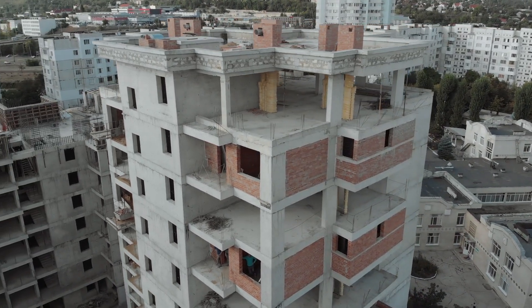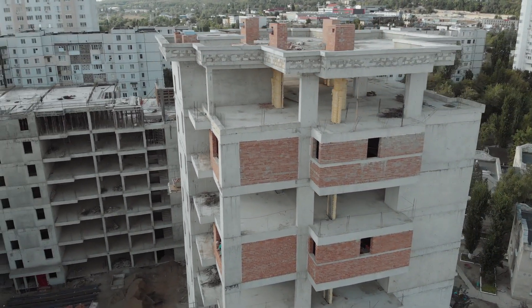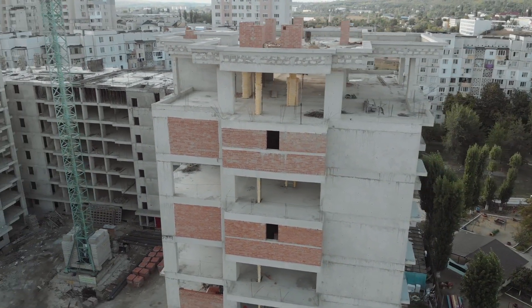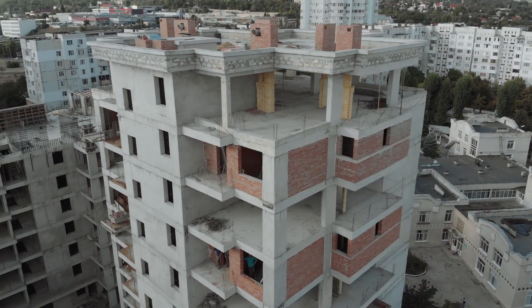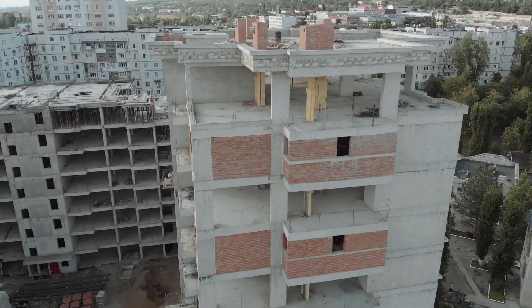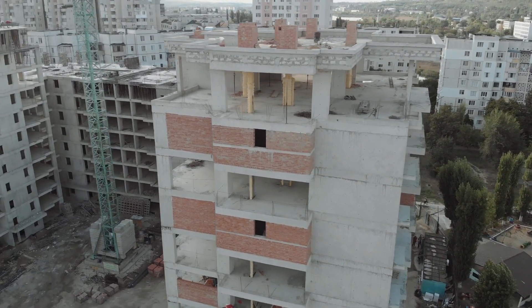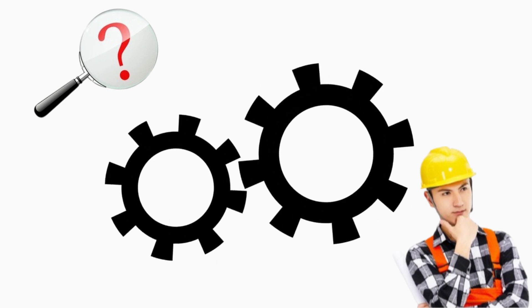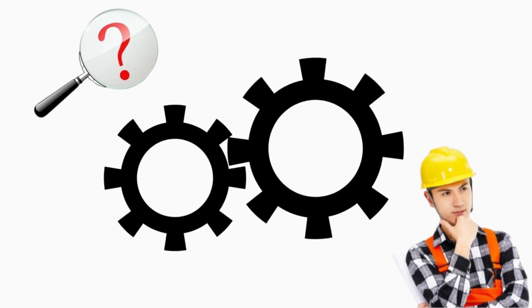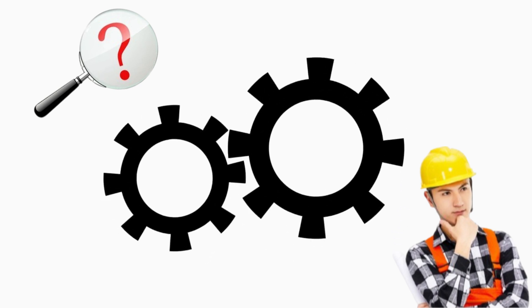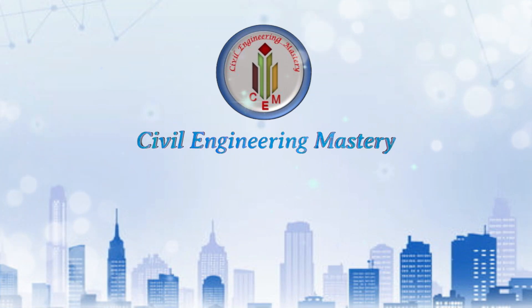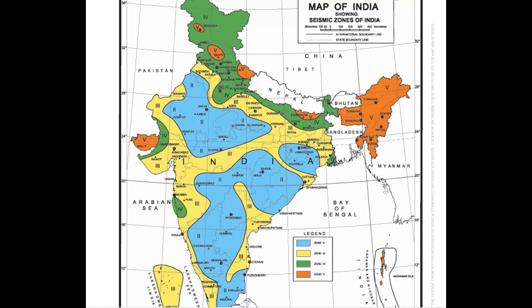Hey friends, welcome back to Civil Engineering Mastery. Seismic analysis is very important in all types of buildings. In India we have to follow the code IS 1893, which is specifically meant for earthquake resistant design of structures. As per IS 1893:2016, we have five seismic zones in India. In this video we are going to discuss why we have five seismic zones in India, what is the reason behind that, and what are all the factors we have to consider as per IS 1893:2016.